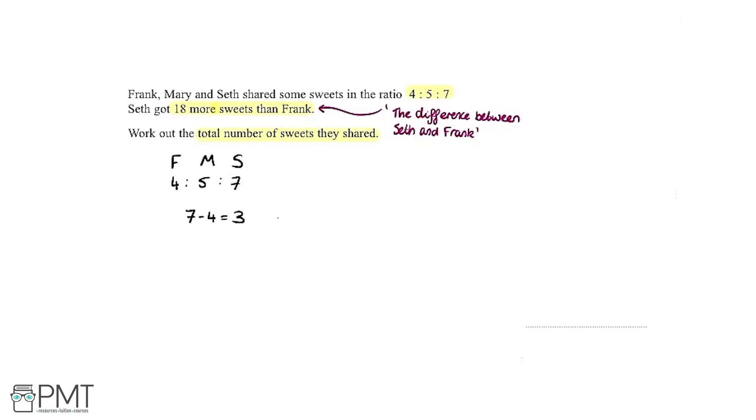I'm going to label this as the ratio difference. This isn't the actual amount of sweets they've got, this is just the ratio between the different people. We know in real life the actual difference is 18, because Seth has got physically in real life 18 more sweets than Frank. I'm going to call it the real life difference.